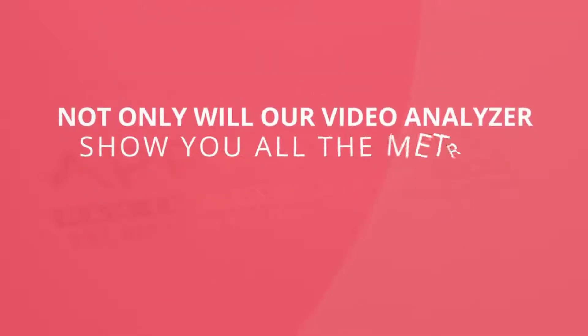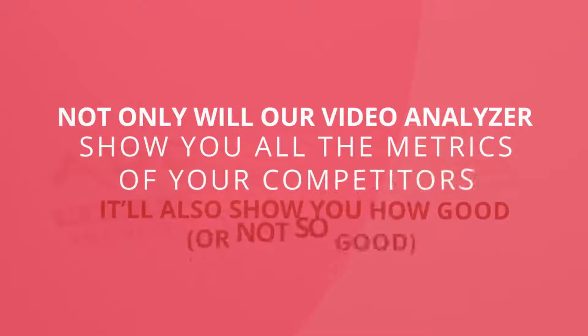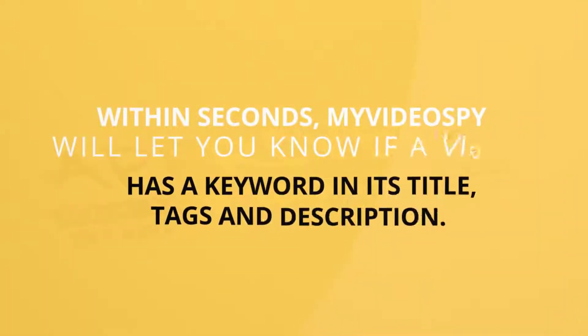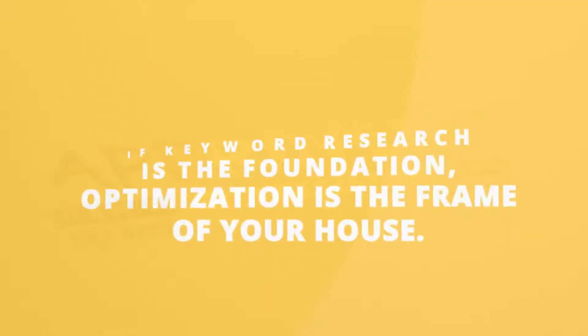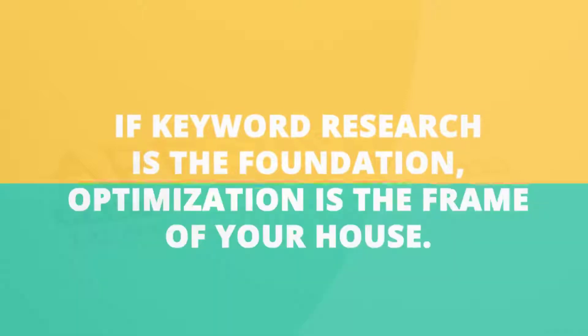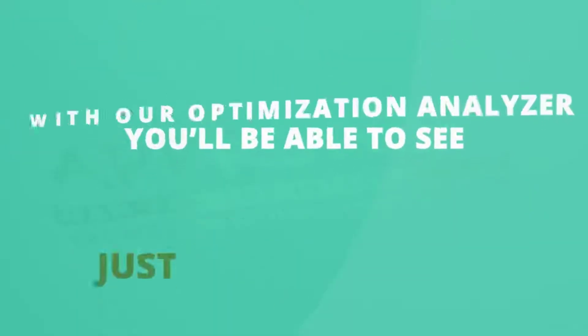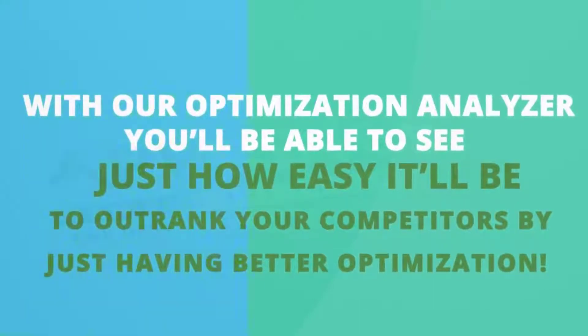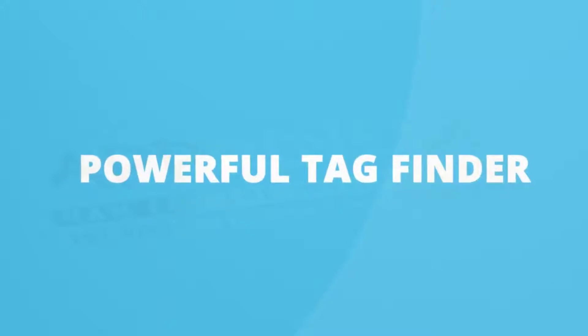After that we have our optimization analyzer. Not only will our video analyzer show you all the metrics of your competitors, it'll also show you how well — or not so well — your competitors are optimized for a particular keyword. Within seconds, My Video Spy will let you know if a video has a keyword in its title, tags, and description. If keyword research is the foundation, optimization is the frame of your house — and our optimization analyzer shows you just how easy it'll be to outrank competitors with better optimization.